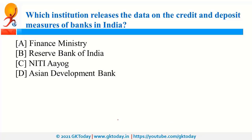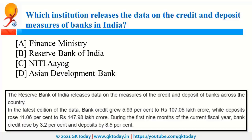The Reserve Bank of India releases data on the credit and deposit measures of banks in India. As per the recent data, bank credit grew at the rate of 5.93% while deposits grew at approximately 11%. This data is important for banking examination candidates, but for other exams, the approximate 6% credit growth figure is sufficient.